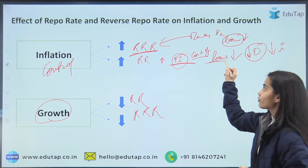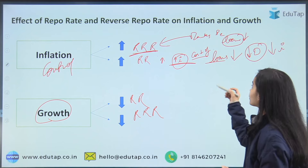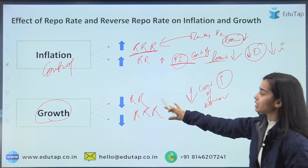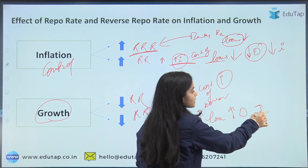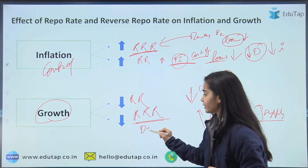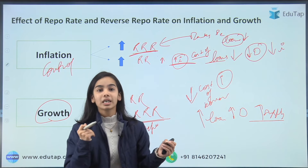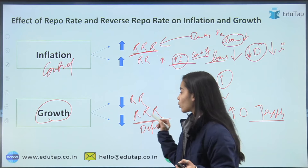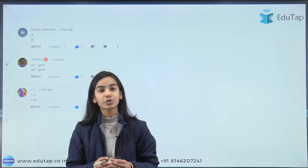To promote growth, both rates are decreased. When the repo rate decreases, banks get loans at a lower interest rate and pass this on by offering cheaper loans, which reduces the cost of borrowing. Demand increases, supply increases, and economic growth accelerates. By decreasing the reverse repo rate, banks are discouraged from depositing with the RBI since returns are low, so money circulates in the economy instead, increasing transactions and demand.